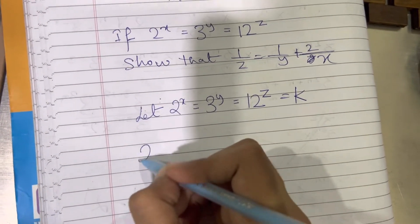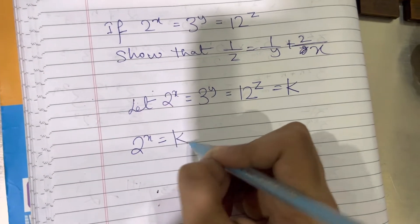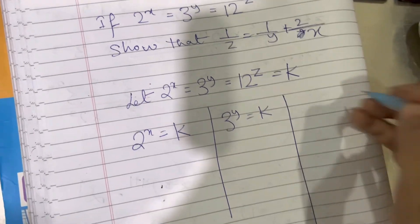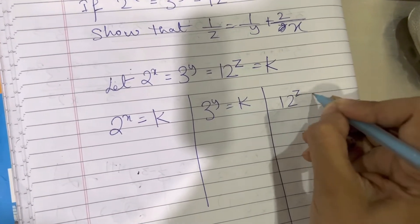Which means that 2 to the power x equals k, 3 to the power y equals k, and also 12 to the power z equals k.